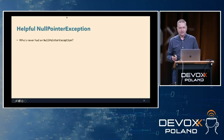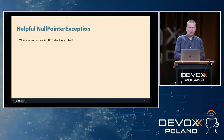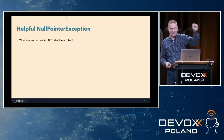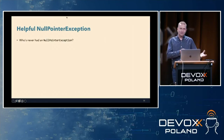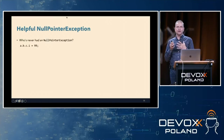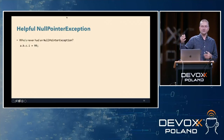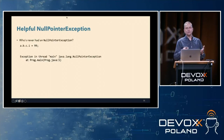Another thing in JDK 14 — and probably my favorite feature — is the helpful NullPointerException. Quick show of hands: who has never had a null pointer exception in their code? Right, everybody has had one at some point. The problem comes when we chain references together and say a.b.c.i = 99. All well and good, except when we get a NullPointerException and it just says: exception in thread main, NullPointerException at line 5.